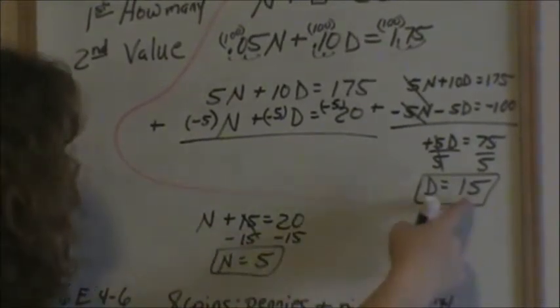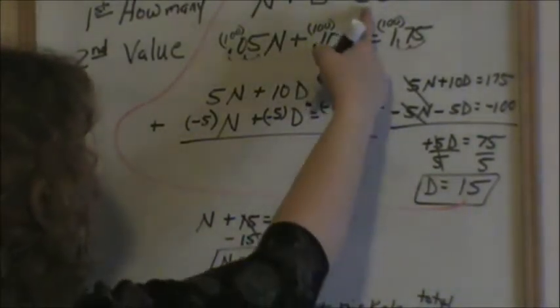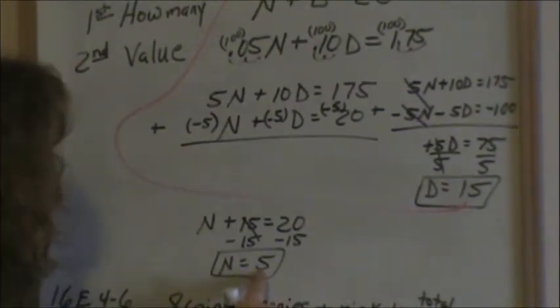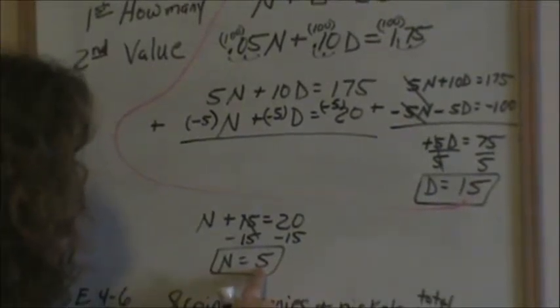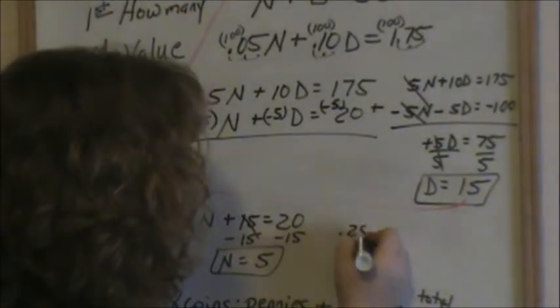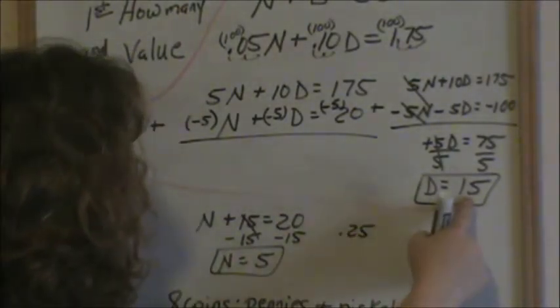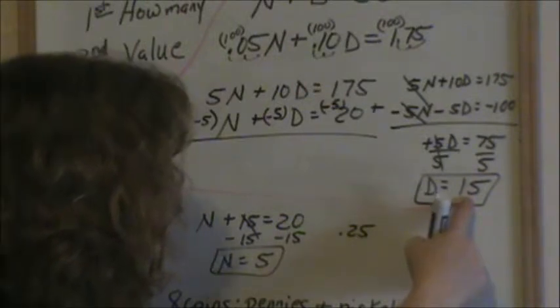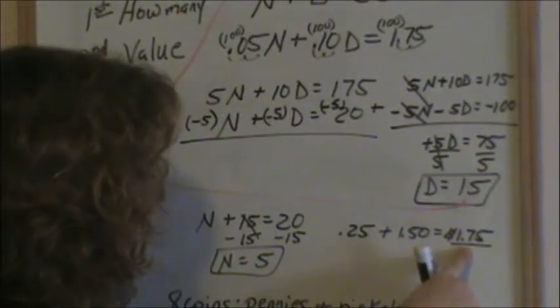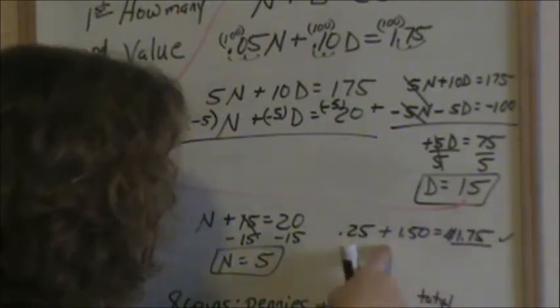Remember, the number of nickels plus the number of dimes should equal the total coins, which is 20. You can also check it by the value. If I have 5 nickels — 5 cents for every nickel — that's 25 cents. And if I have 15 dimes, 15 times 10 cents is $1.50. The value comes out to $1.75, which is what the problem told us. So that is the way you check these problems.